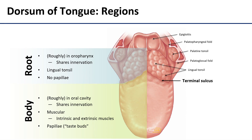The body of the tongue, that anterior two-thirds, sits roughly in the oral cavity and again it's going to share that pattern of innervation. The body of the tongue is very muscular — it's home to all of those intrinsic muscles and it has attachment points for all of the extrinsic muscles as well. This is additionally where all of the lingual papillae are found. These are often referred to as taste buds but they're also going to include some touch receptors.